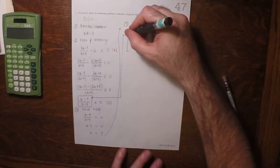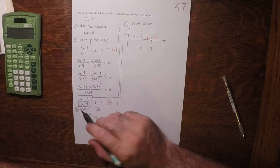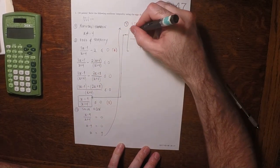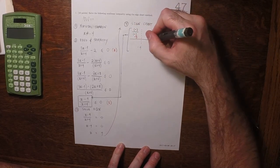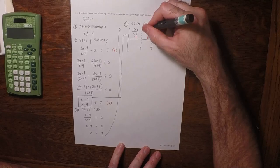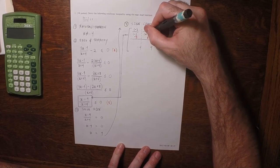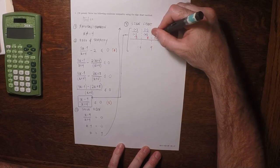If we plug in negative 5, the numerator will be negative and the denominator will be negative. If we plug in 8, the numerator will be negative and the denominator will be positive. If we plug in 10, it's positive over positive.